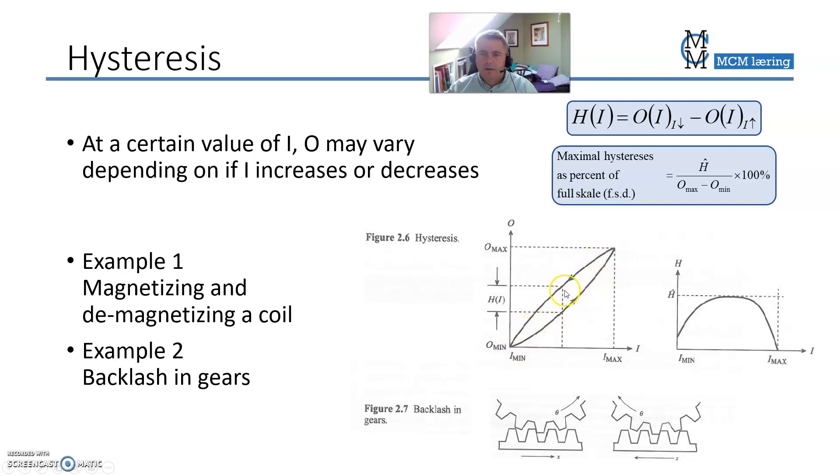The hysteresis is often given as a percent of full-scale deflection. So you look at it with respect to the output span and then you make it into percent.